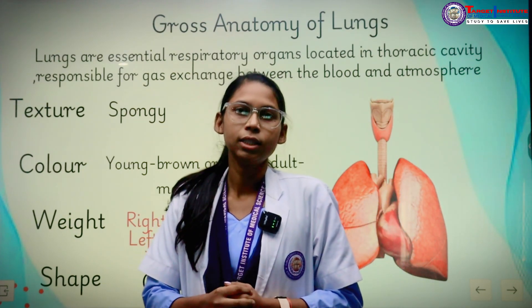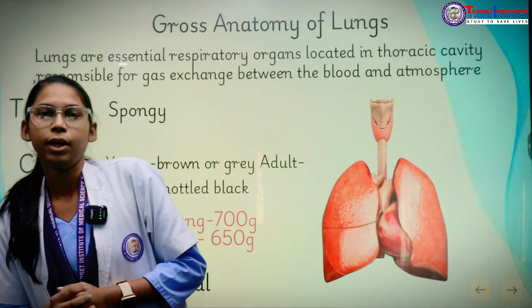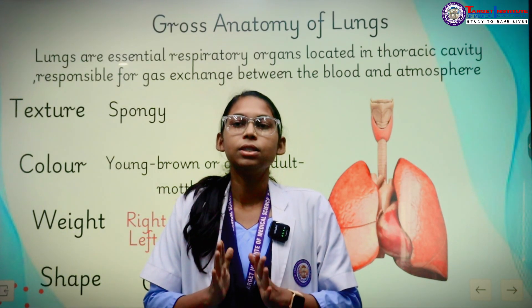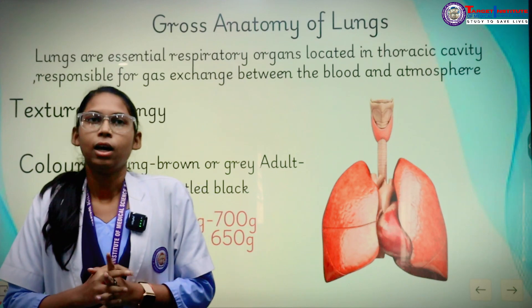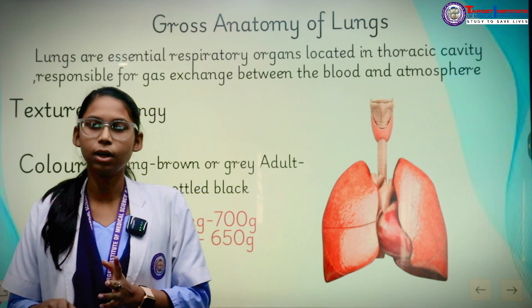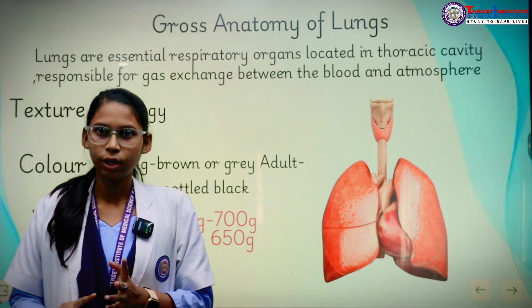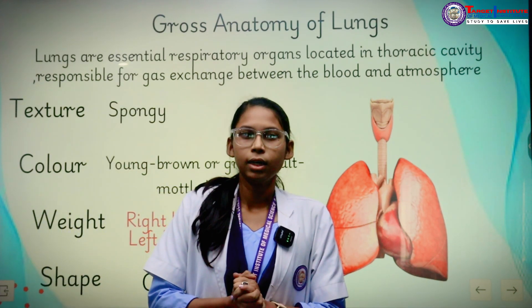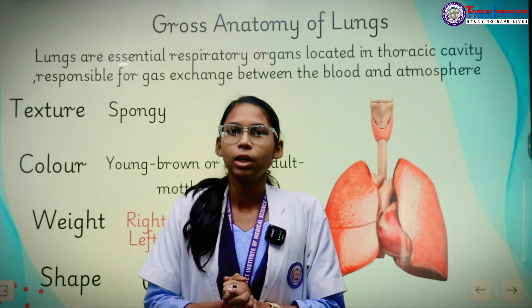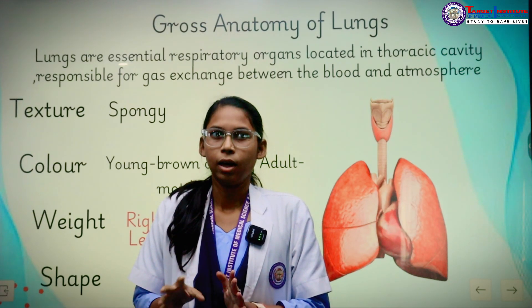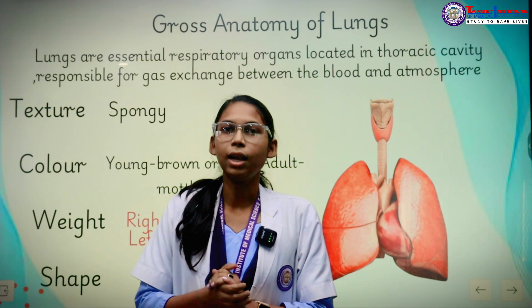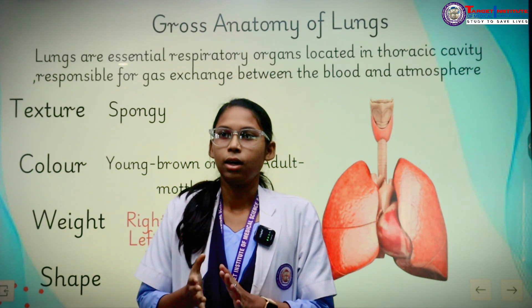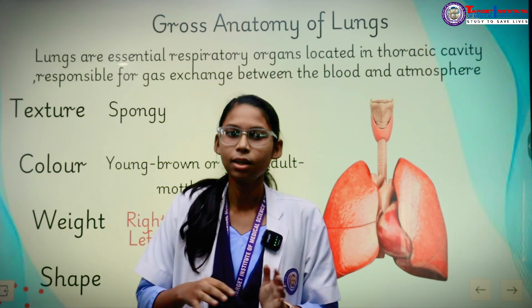When we talk about the weight of the lungs, both lungs have different weights. The right lung weighs around 700 grams, while the left lung is 650 grams, because the left lung is 50 to 100 grams less heavy than the right one.